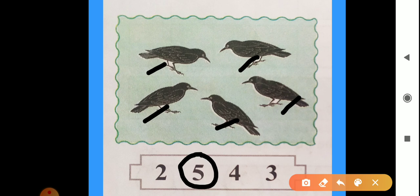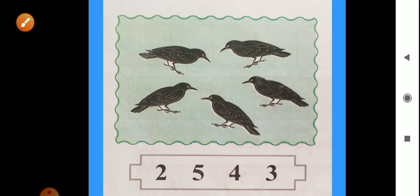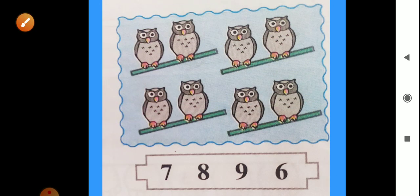Why we circle the correct number. Now look this. There are owls. We can see. Here are owls in pairs. How many pairs? Here are 4 pairs. But how many owls are here? We will count. Okay.